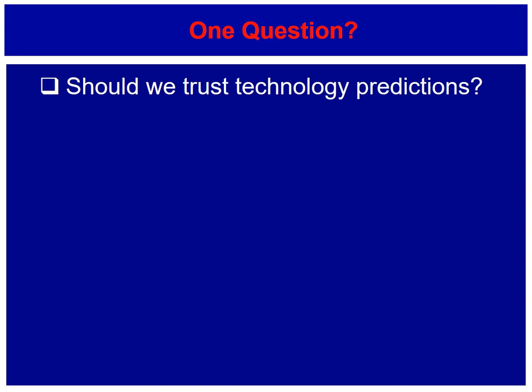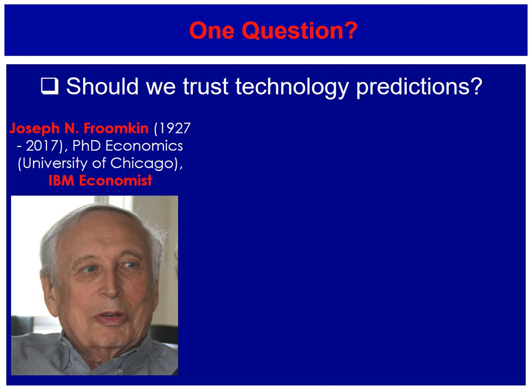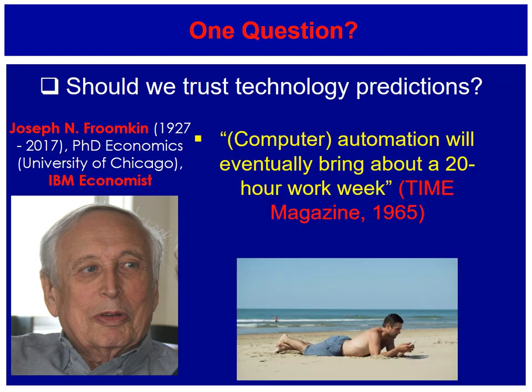Should we trust technology predictions? Some have been accurate, one or two have been completely wrong. Here's an extreme example: Dr. Joseph Fromkin, a PhD in economics from the University of Chicago and IBM economist, said in 1965 that computer automation would eventually bring about a 20-hour work week and we would live a life of leisure. I'm not living a life of leisure on the beach most of the time — I wish I was.